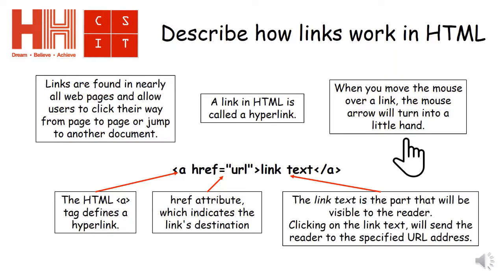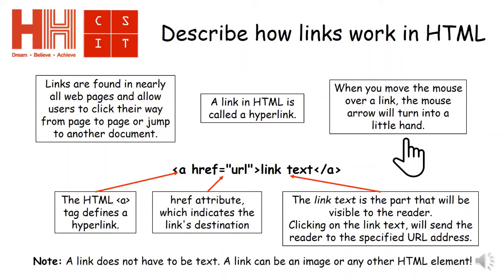And finally, the link text. This is the part that will be visible on the website — it's what the user needs to click on to actually go to the website. Note that the link we click on doesn't actually have to be text; it can be an image or any other HTML element.